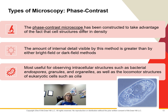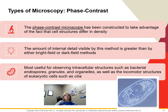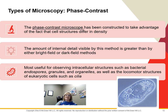When structures have differences in density, we can use a phase contrast microscope, which is designed to take advantage of those density differences. It has a device that transforms changes in light passing through the specimen into different intensities of light, so the amount of internal detail we can see is greater. We use this for observing things inside cells — intracellular structures like endospores, organelles, granules, cilia, or flagella.